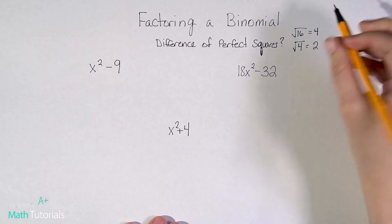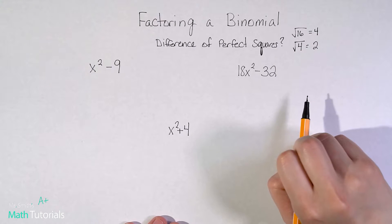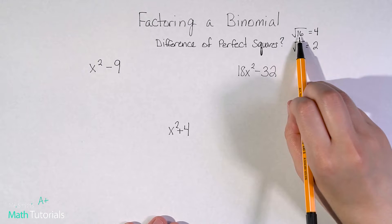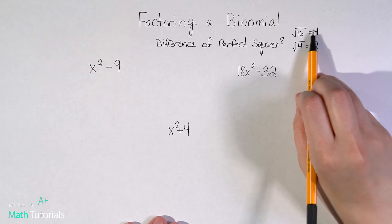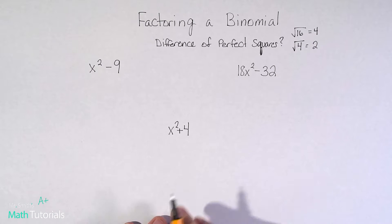And what this essentially means is in order to get four, I would do two times two. So this number times itself would give me four. Same thing with 16. So because it's a whole number, what this really is saying is that four times four would give me 16.